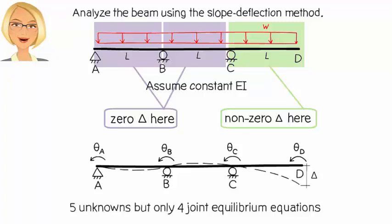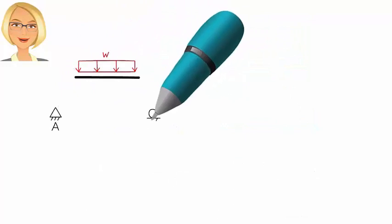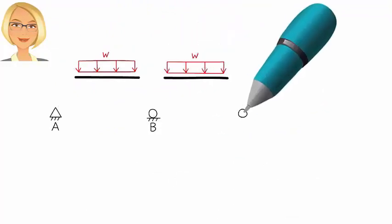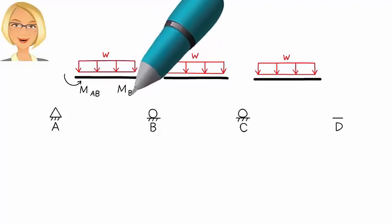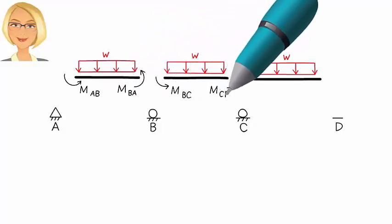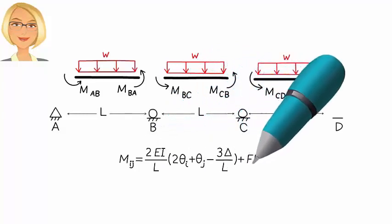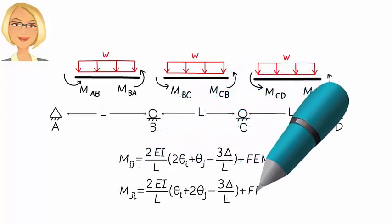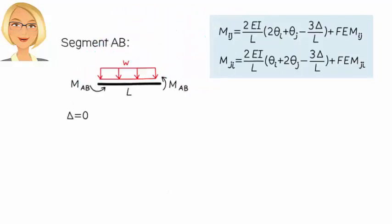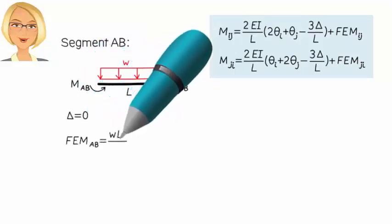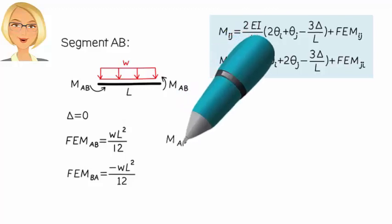To begin, let's separate the joints from the members, like this. Now, draw member end moments and write the slope deflection equations for each segment. Here are the slope deflection equations in their general form. For member AB, we have a 0 delta. And the fixed end moments are WL squared over 12 at the left end of the segment and negative WL squared over 12 at the right end of the segment. Therefore, we get the equations shown.